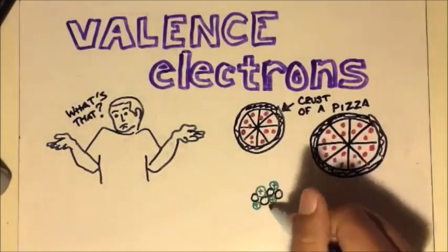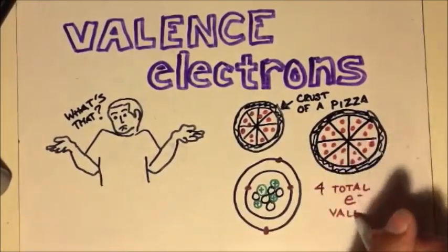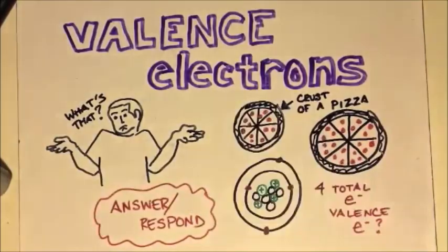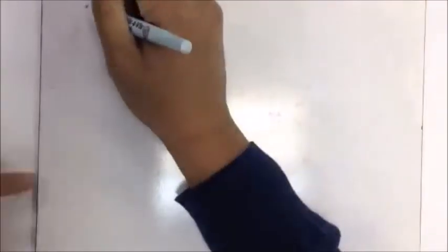If we talk about another atom, for instance, beryllium, which is the example we used earlier, we have four total electrons, but how many valence electrons do we have? That's right, two, because two are on the very outside of it.